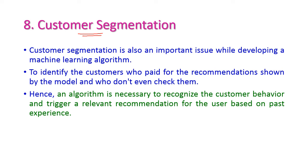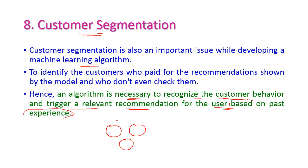The next issue is customer segmentation. This is another important issue in machine learning. In business marketing, segmenting customers in the proper way is highly important. An algorithm is required to recognize customer behavior and trigger a relevant recommendation for the user based on past experience. We need to monitor the behavior of the customer and accordingly segment them.